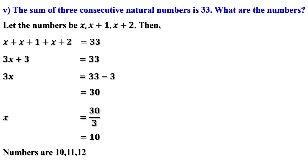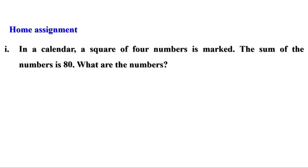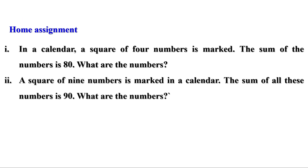Today we have discussed problems on page 41. Now there is a homework. In a calendar, a square of 4 numbers is marked — the sum of the numbers is 80, what are the numbers? Second part: a square of 9 numbers is marked in a calendar, the sum of all these numbers is 90, what are the numbers? In the next video we shall discuss different problems. Till then, bye.